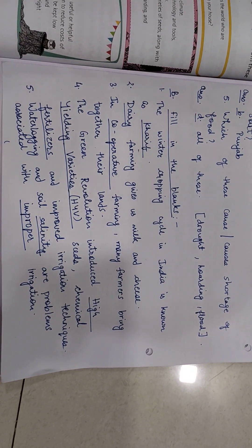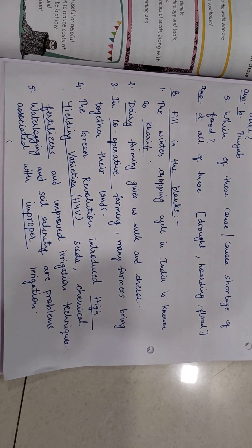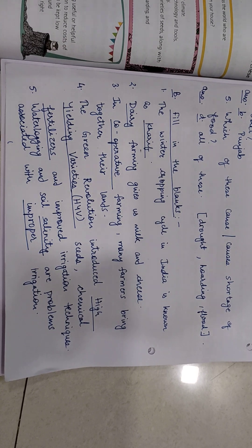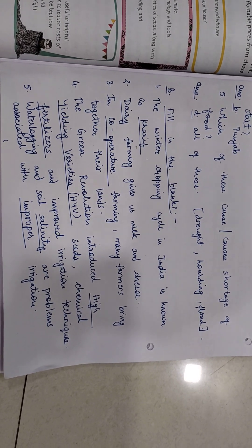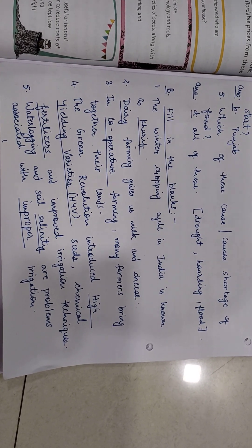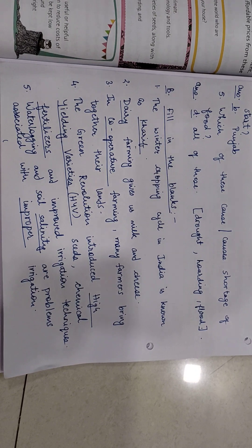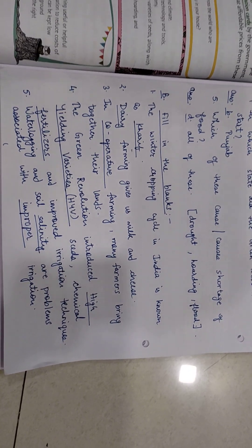Fifth: water logging and soil salinity are problems associated with improper irrigation. The answers are salinity and improper.